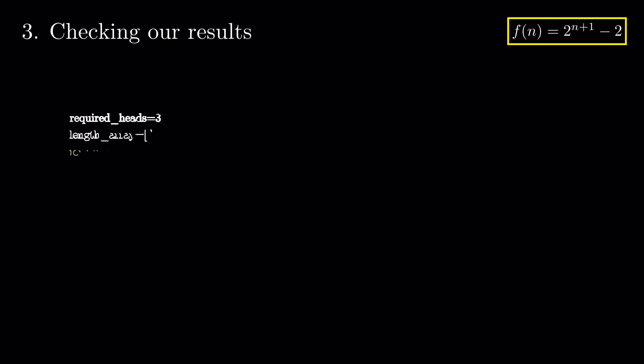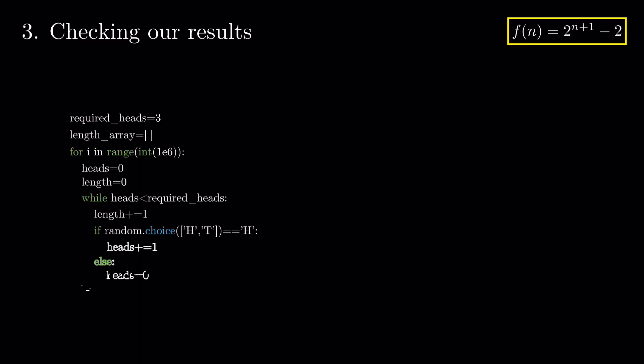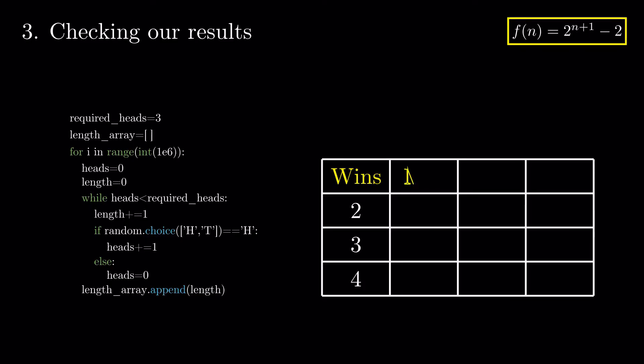Let's see if we can get the same results by simulating the tosses. For n equals 2, 3, and 4, we look at 1 million simulations and compute the minimum, maximum, and average number of tosses needed.